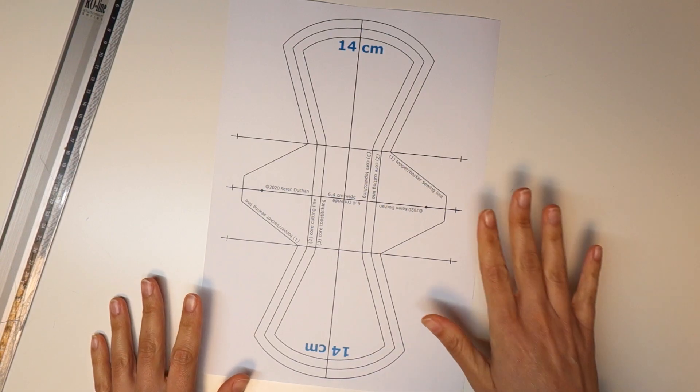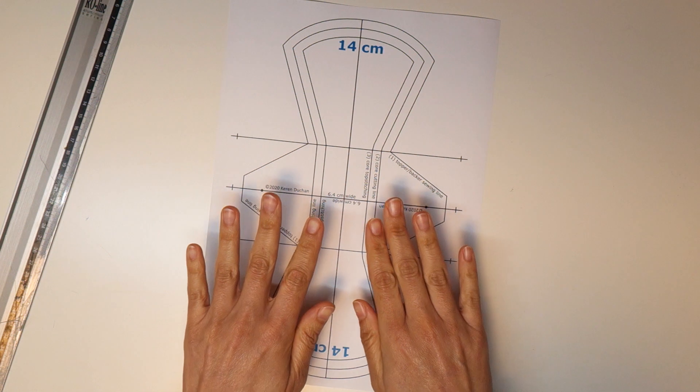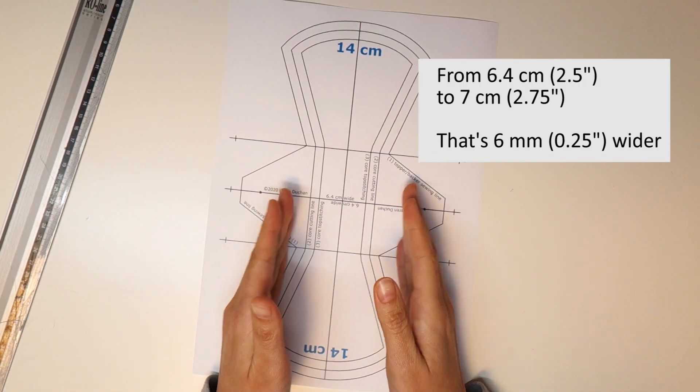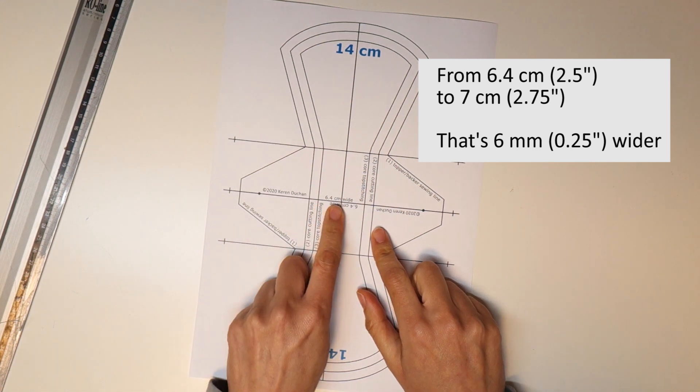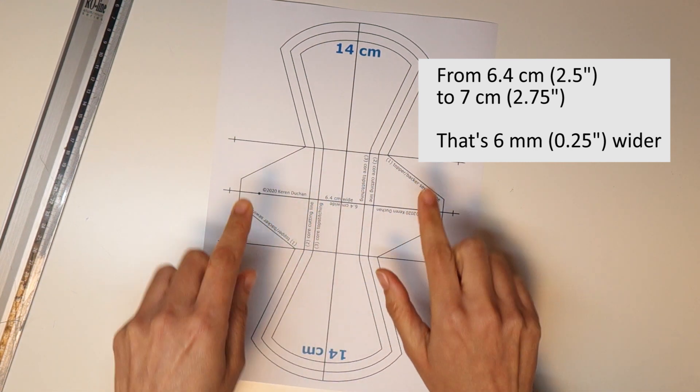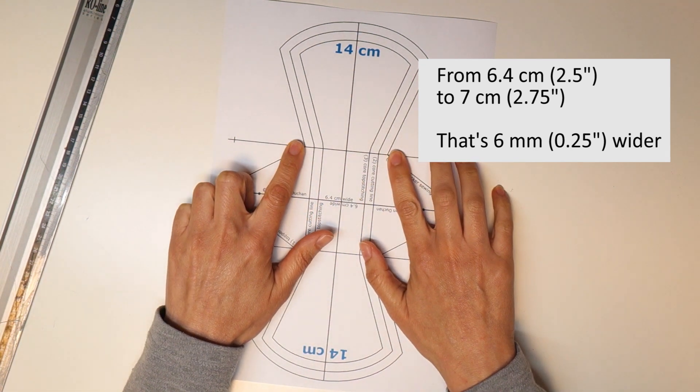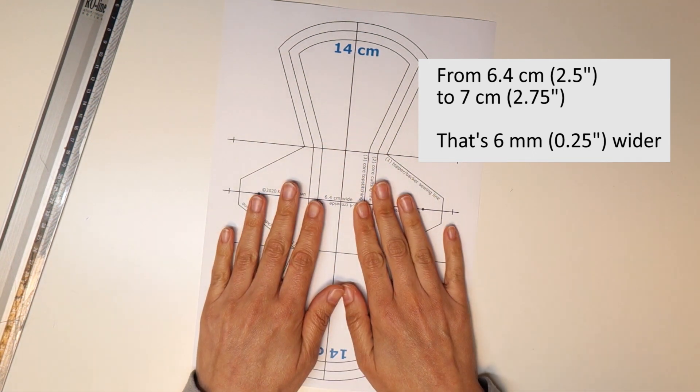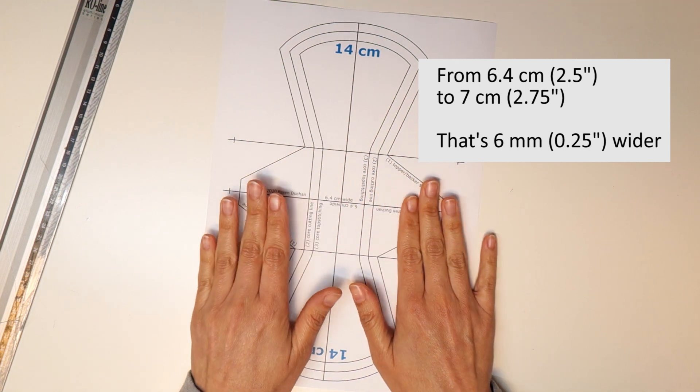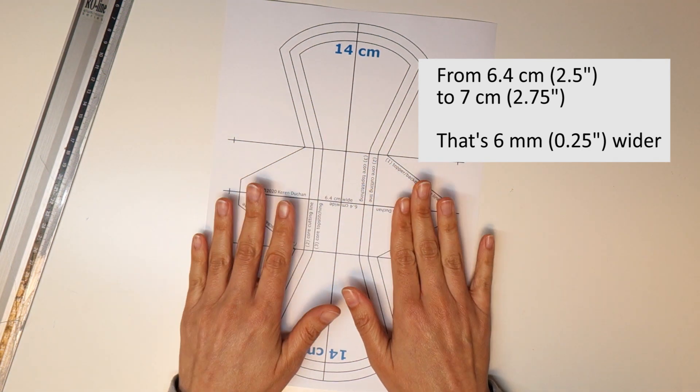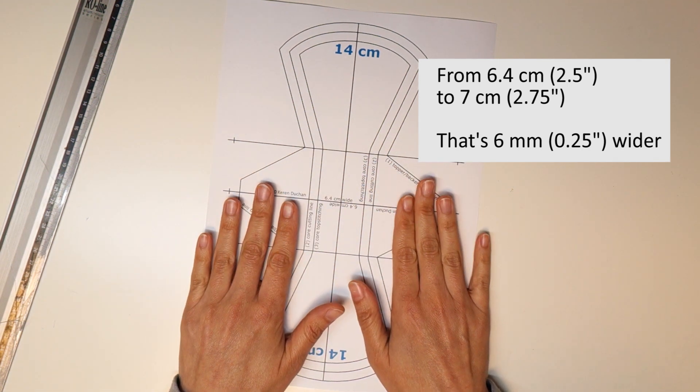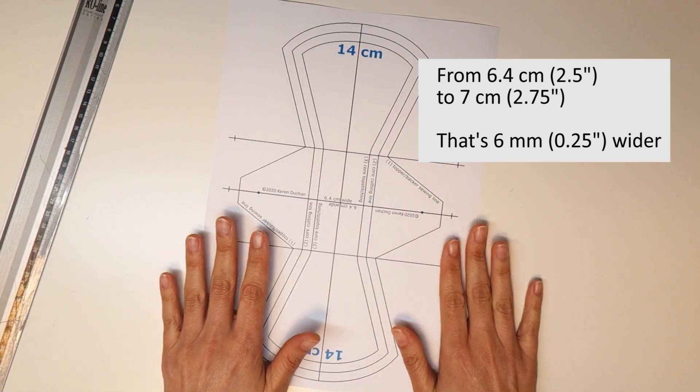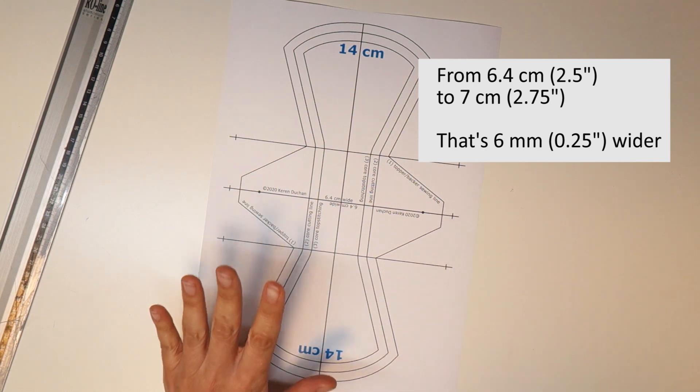In this video I want to show you how to take a pad pattern and adjust its snap widths. So this pad pattern is 6.4 centimeters wide, which is 2.5 inches wide. And I'm going to convert it into a 2.75 inch wide or 7 centimeter wide pad. So I'm basically making it wider. And I'll also show you how to make it narrower. But we'll start with making it wider.